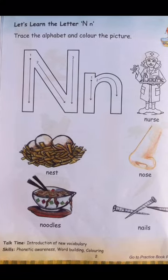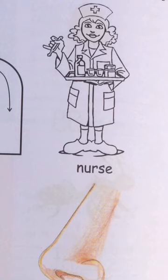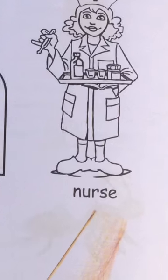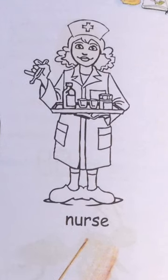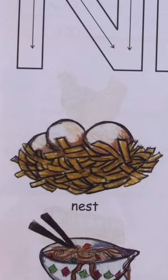What is the sound of N? N ki sound kaisi hoti hai? The N sound is 'na'. Jaise hum jab words padhenge, to unke starting ki jo sound hogi, hum check karenge kya woh N ki awaaz hai ya nahi. The first one is Nurse — nurse ke start mein N sound aa rahi hai: 'na'. N for nurse.